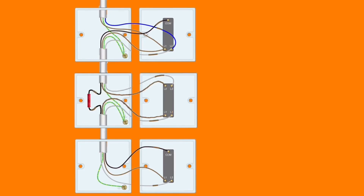This gives us two-way and intermediate switching of a lighting point - three positions from which we can turn the light on and off. As stated previously, you could have as many intermediate switches as you like for vastly greater control over the light, so you could have 10 switches controlling the one light.